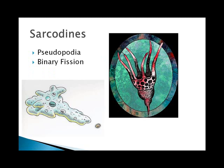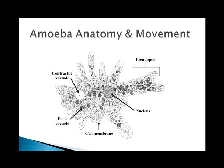Sarcodines are the amoeba group. They move by pseudopodia, which means false feet. Some of them have shells, some don't. They all reproduce using binary fission, which looks like mitosis but on a cellular level. The pseudopods are used for movement and feeding. In amoebas, the shape is constantly changing, and food is stored in food vacuoles, which merge with lysosomes for digestion. The contractile vacuole is for water regulation.